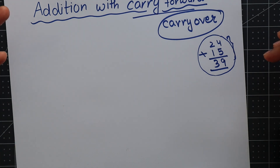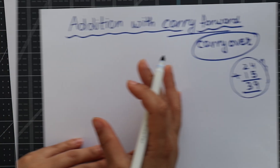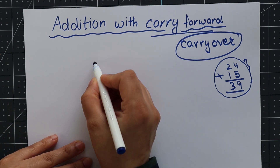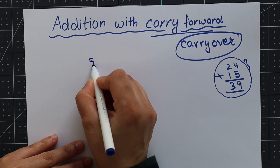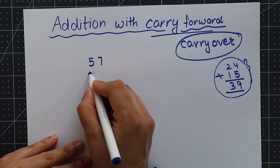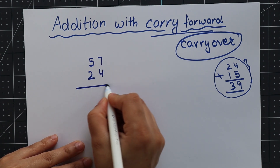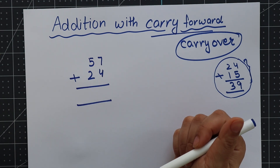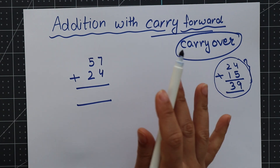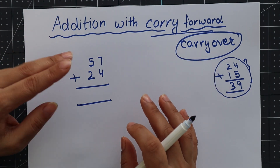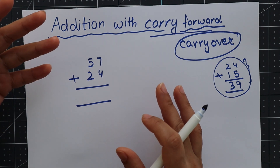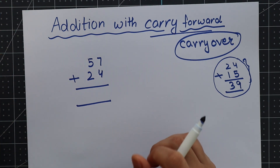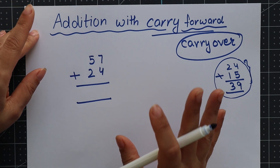So let's take a problem here — let's say we have to add 57 and 24. Now if we have this problem, we need to know how to solve it using the carry forward concept. Carry forward is mainly used when a two-digit or three-digit number is used — like when you add bigger numbers. In that case, I need to use the carry forward concept.